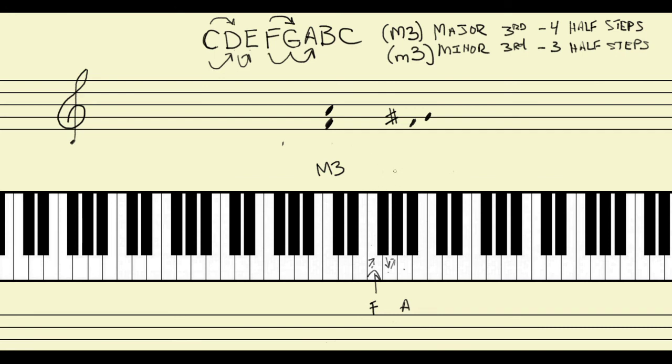But remember, this black key right here can be written in two different ways, or spelled in two different ways. We can call it a G sharp, meaning the black key that is one half step above G, or we can think of it as an A flat, or the black key that is directly below A. So if we rewrite this as F to A flat, it's exactly the same two notes. It sounds exactly the same when we play it on the piano. But now we have the interval of a third. F, G, A. So now we truly have written a minor third.